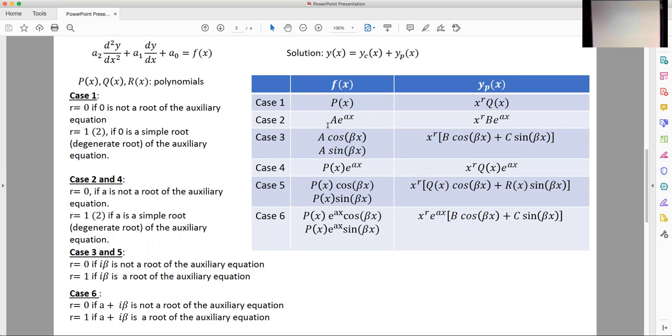Similarly for the second case if f of x is an exponential then you also guess as your solution an exponential but with an extra factor of x to the r where r depends on the roots of the auxiliary equation.